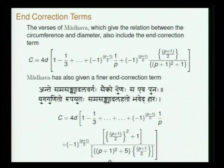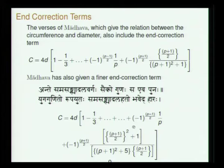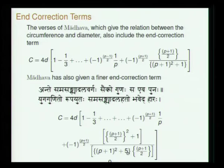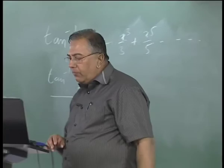Another verse of Madhava is quoted as a sukshmatara — a better correction. 'Ante samasankhya dhala vargaha saiko gunaha sa eva punaha' — samasankhya is p+1, the end even number, p being the last odd number. Samasankhya dhala is half of it, vargaha is the square, saiko means adding 1, giving the numerator. 'Yuga gunito rupayutaha' — multiplying by 4 and adding 1, then dividing by (p+1)/2 — gives the divisor. Simplification gives (p+1)² + φ in the denominator. Shankaravarya in Kriyakramakari calls this the sukshmatara, a much more accurate correction term due to Madhava.